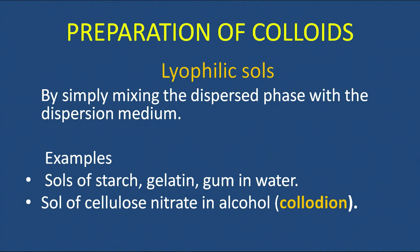A sol is a type of colloid in which the dispersed phase is solid and the dispersion medium is liquid. We can also prepare such sols in alcohols. For example, cellulose nitrate dissolved in alcohol gives a sol called collodion, which has a very special place in colloid chemistry. Collodion is used for preparing ultra-filter paper, which reduces the pore size of ordinary filter paper and is used for separation of particles in colloidal systems.